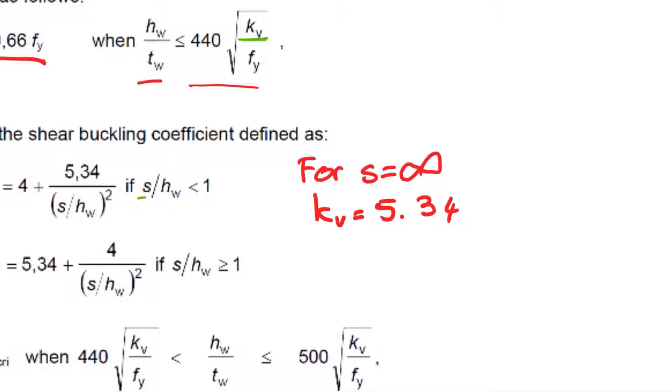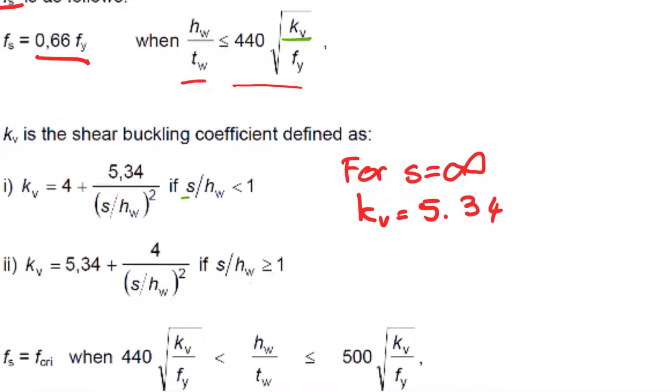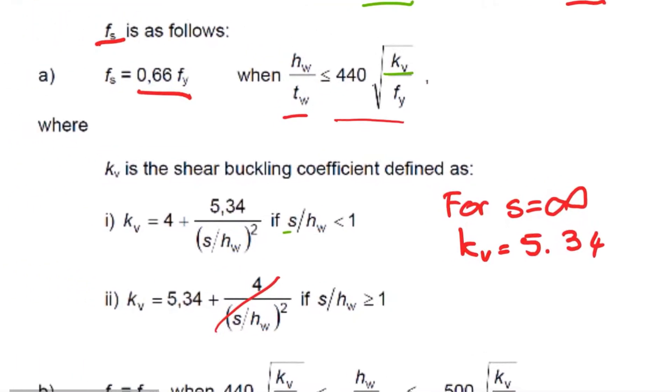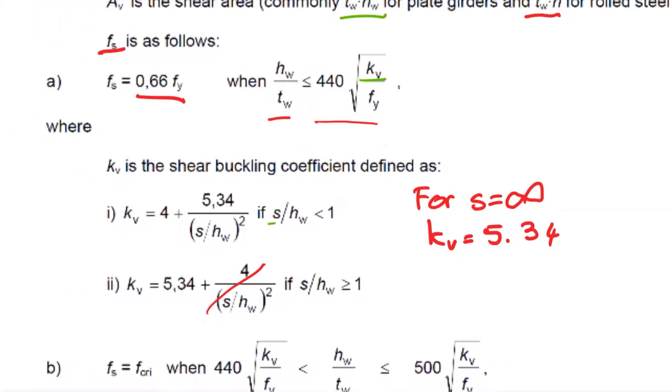This whole term then gets changed. So when s over hw is greater than one, this whole term disappears. If s is tending to infinity, you can take for the sake of this course kv is 5.34, and then you find this actually becomes a constant value for a specific steel grade.